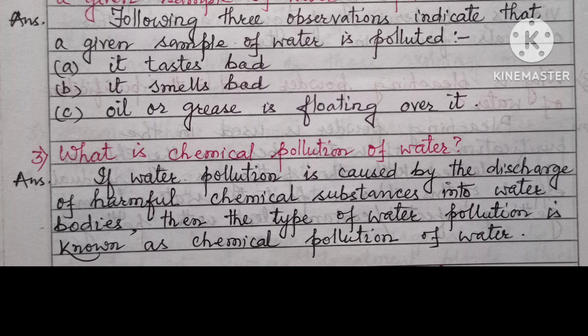Question 3: What is chemical pollution of water? Answer: If water pollution is caused by discharge of harmful chemical substances into water bodies, then that type of water pollution is known as chemical pollution of water. We can also say: chemical pollution of water means water that has been polluted by the discharge of harmful chemical substances into water bodies.